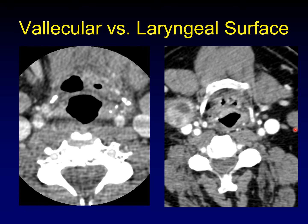Here's an example of tumor spread along the vallecula and laryngeal surfaces. You can see superficial tumor spread completely filling the vallecula, specifically along the vallecula surface of the epiglottis. And here is a tumor arising on the laryngeal surface of the epiglottis — there's the vallecula, this is the laryngeal vestibule, and there is the cancer running along the laryngeal surface of the epiglottis.